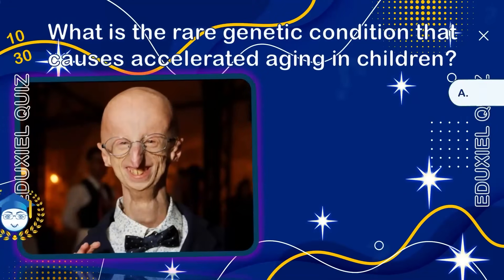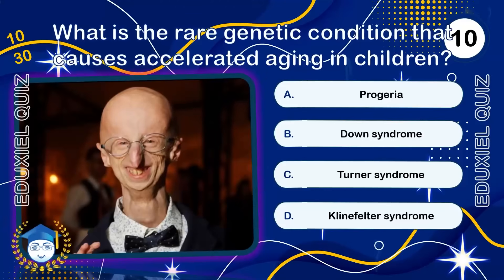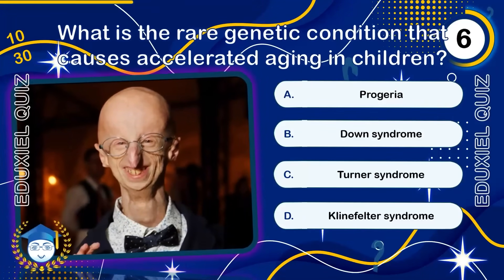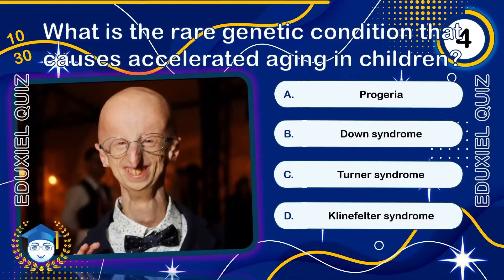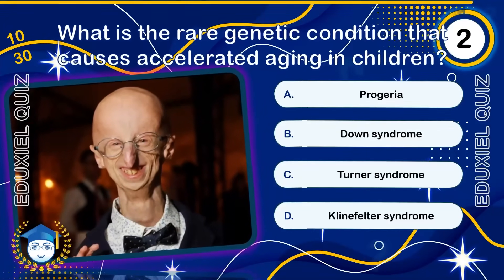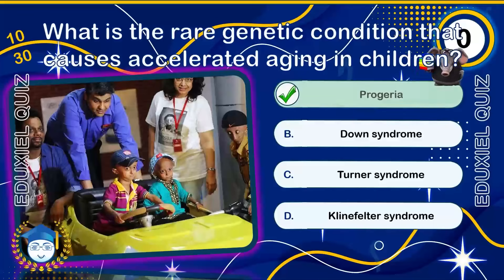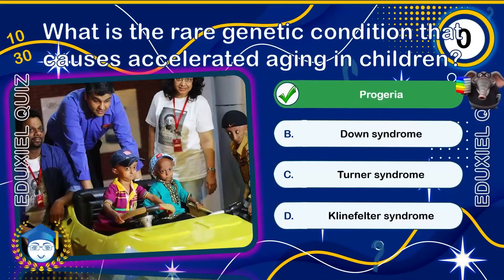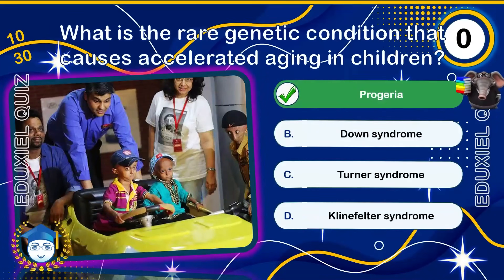What is the rare genetic condition that causes accelerated aging in children? Progeria, or Hutchinson-Gilford syndrome, is a rare genetic disorder causing accelerated aging in children. Affected individuals typically live into their early teens, though some reach their 20s. The condition is linked to a mutation in the LMNA gene, affecting cell stability.